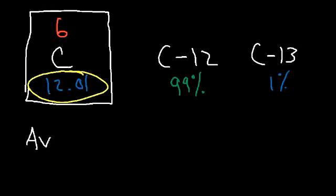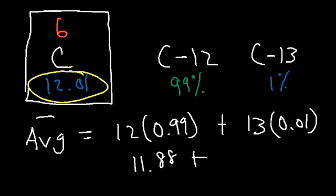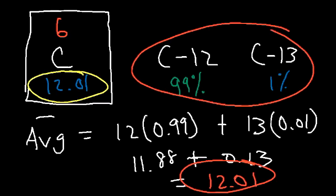The average atomic mass equals the mass of carbon-12 (12) times its decimal percentage (0.99), plus the mass of carbon-13 (13) times its decimal percentage (0.01). That gives 12 × 0.99 = 11.88 and 13 × 0.01 = 0.13. Adding these: 11.88 + 0.13 = 12.01, which is the average atomic mass of carbon. To find the average atomic mass of any element, take the weighted average of all naturally occurring isotopes multiplied by their relative percent abundances.